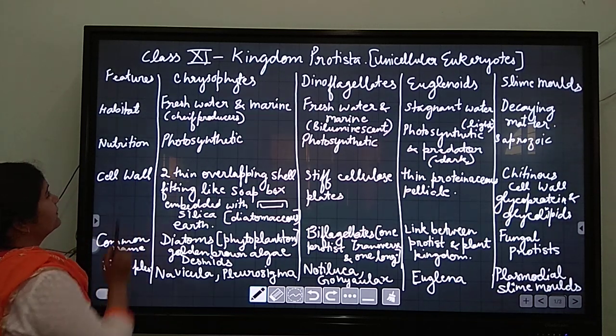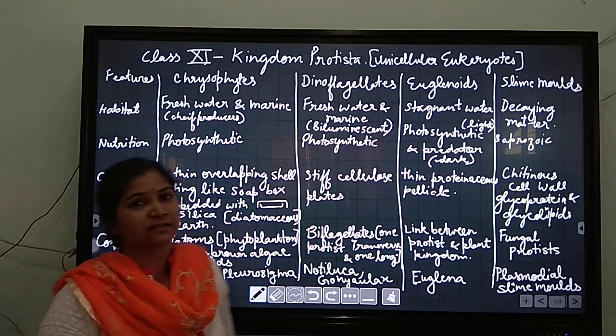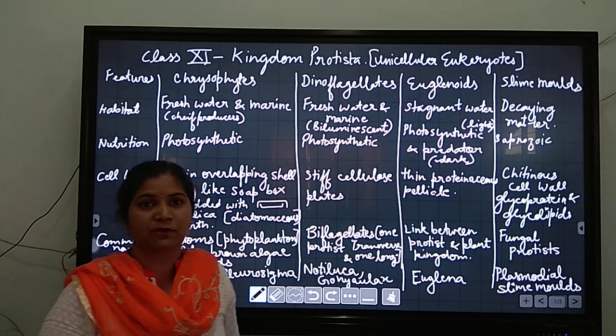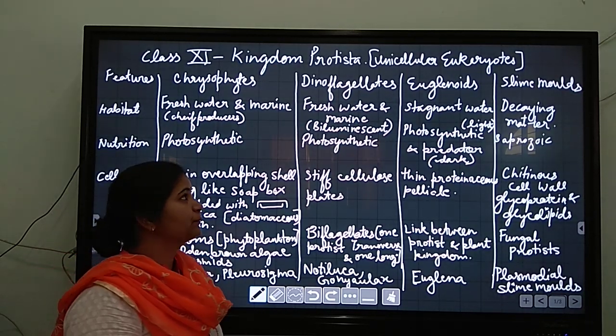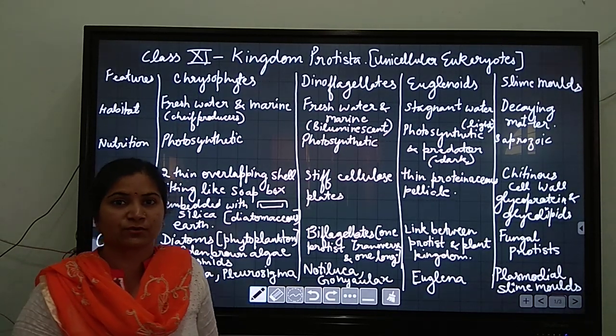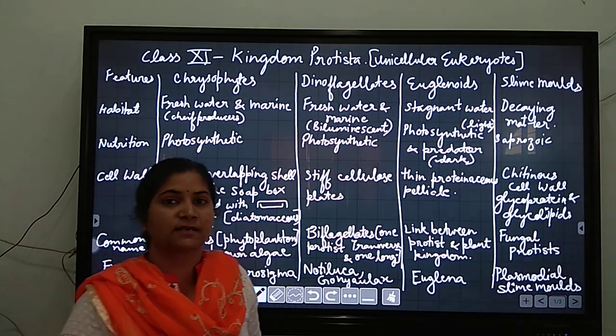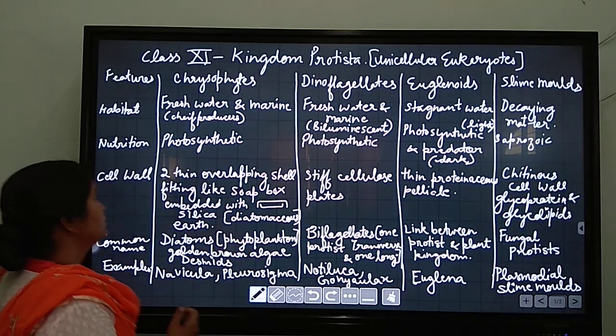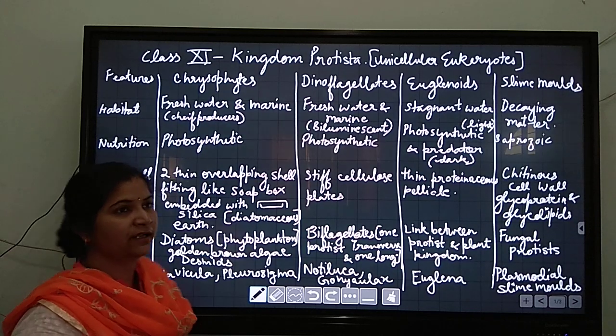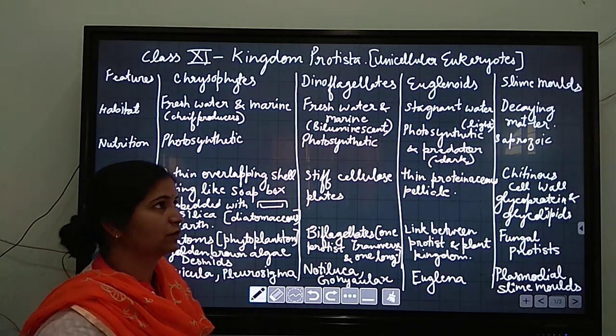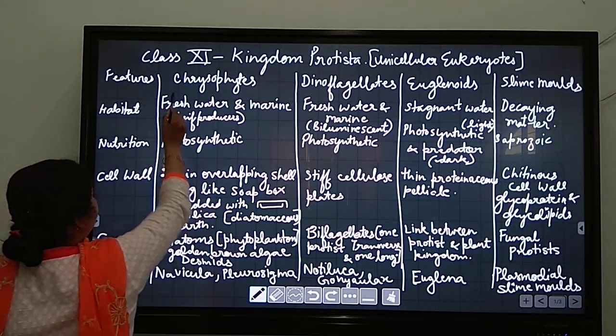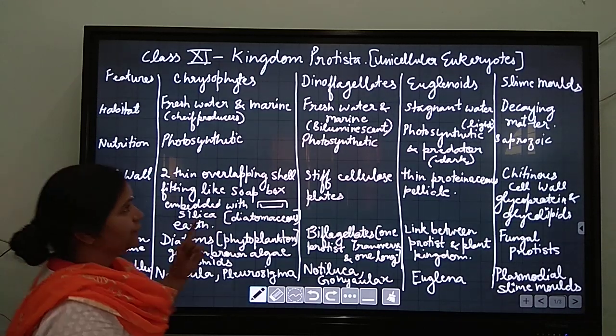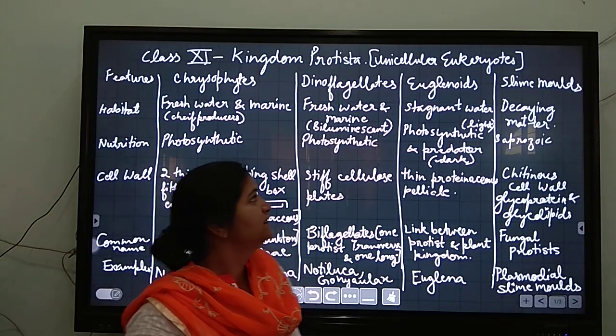Now we are discussing in this table the four types of protists. The fifth protist, the protozoa, we have already discussed in the previous lecture. So here they are considering the four left groups: chrysophytes, dinoflagellates, euglenoids, and slime molds.